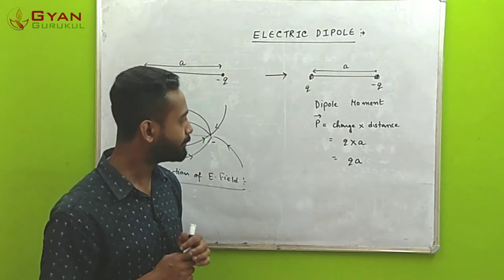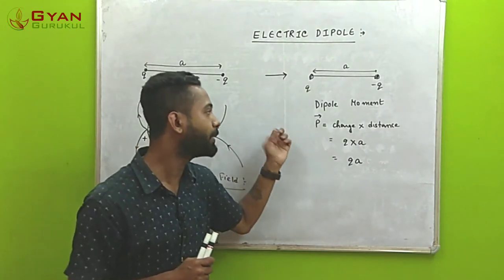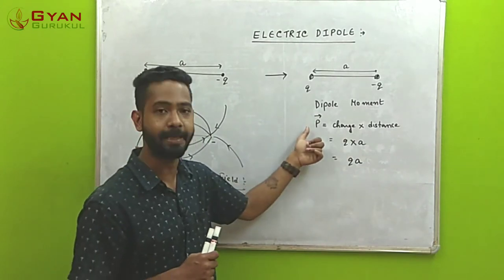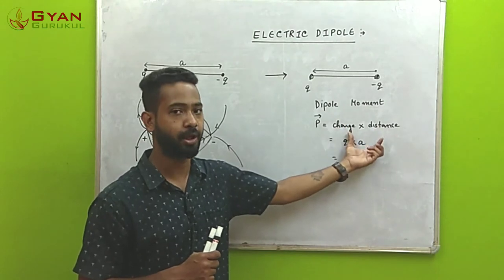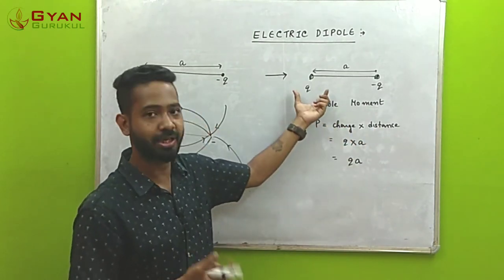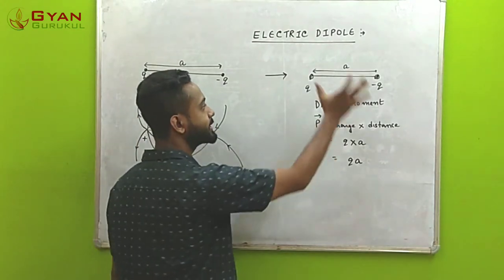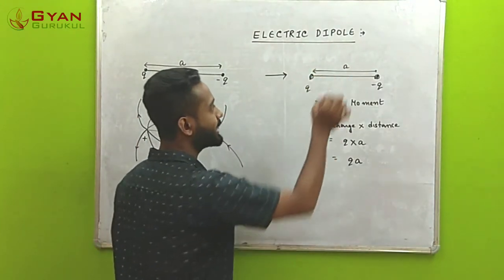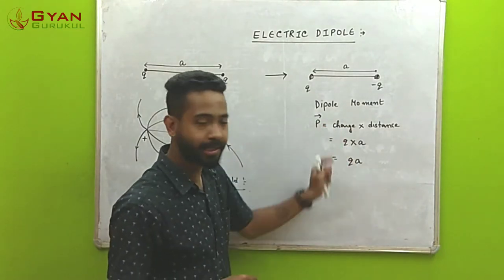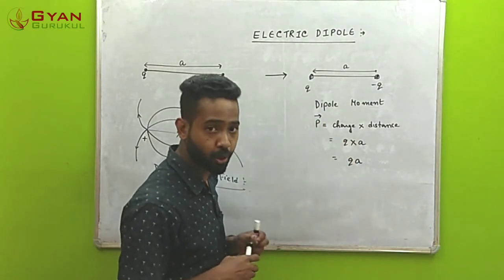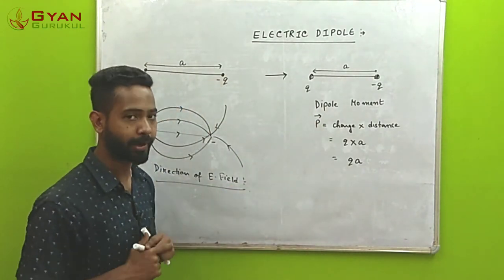When we discuss the dipole, we define a quantity known as dipole moment. Dipole moment is a vector quantity represented by the letter P. It is given by the formula: charge multiplied by distance, where the charge is Q (the positive charge) and the distance A is the separation between the two charges. So the dipole moment is P = Q × A, or simply QA.